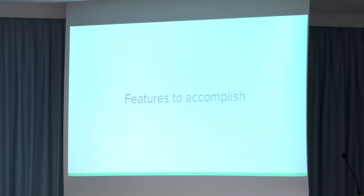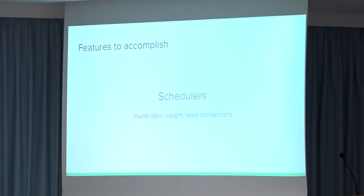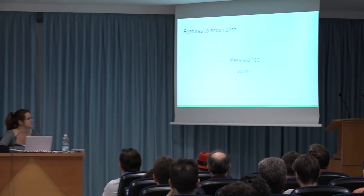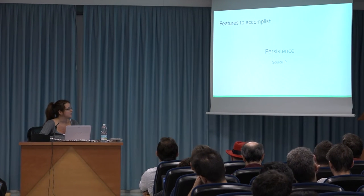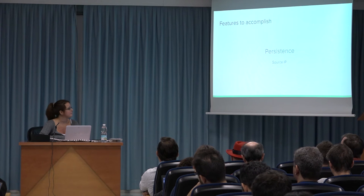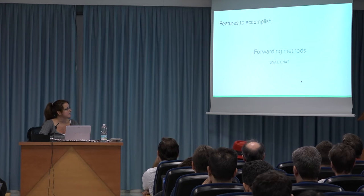What are the features we want to accomplish with load balancing with NF tables? First of all, the schedulers — the main schedulers we have to implement are round robin, weighted, or least connections, which is the most popular one used. The persistence — it's important to have persistence by source IP. As forwarding methods, SNAT and DNAT in order to perform transparency or not.